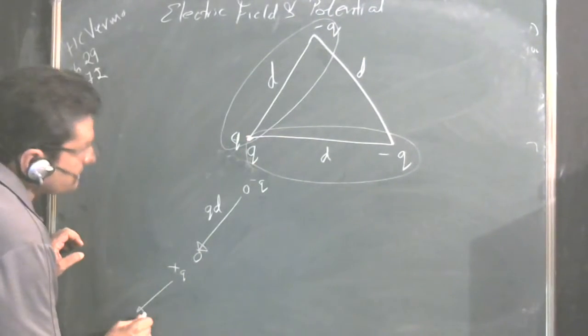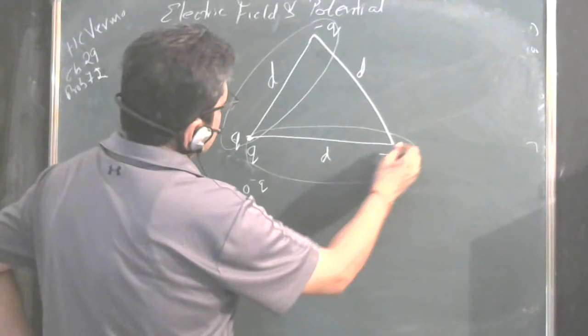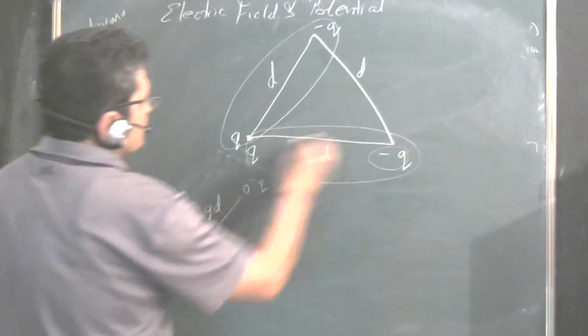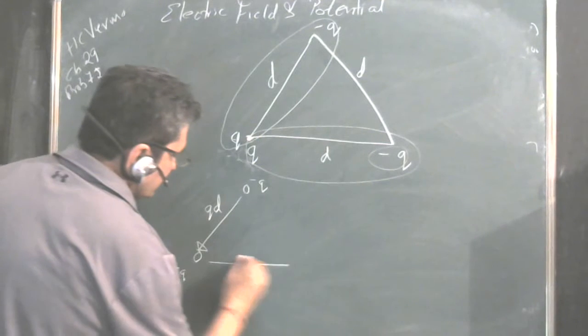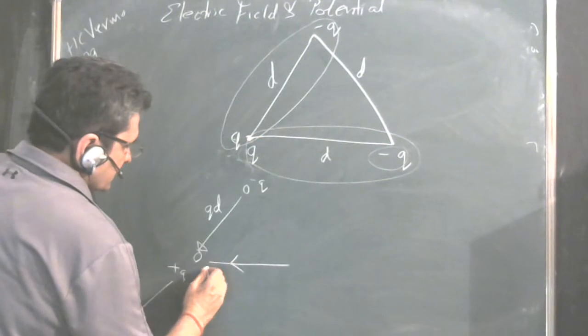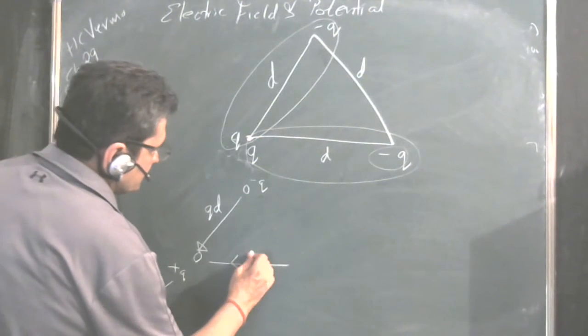Now here there is another dipole moment. Minus Q plus Q. So this is another dipole moment. This is also equal to Q times D.